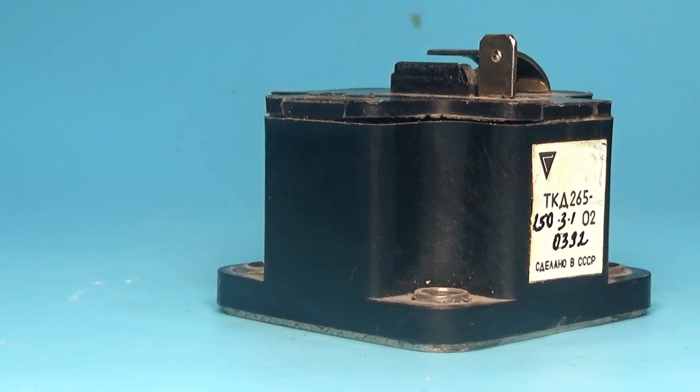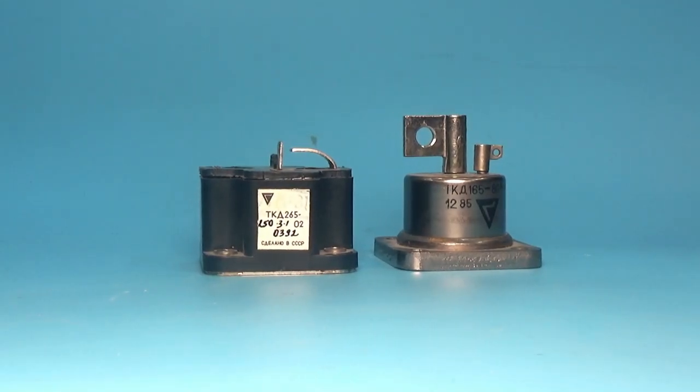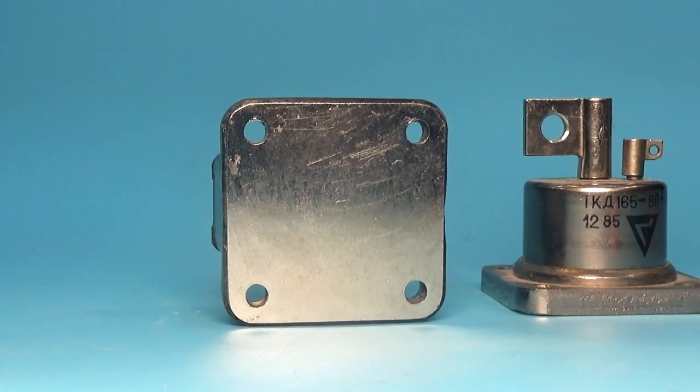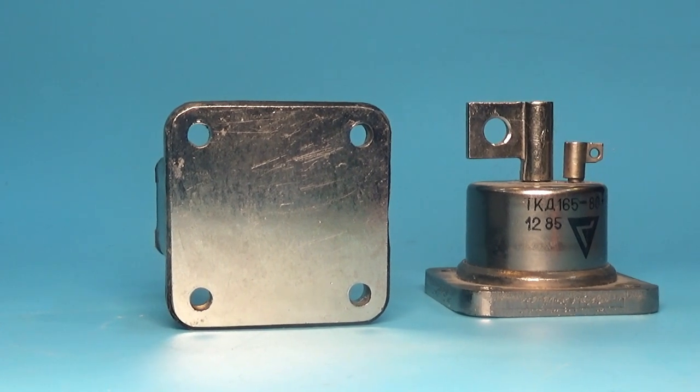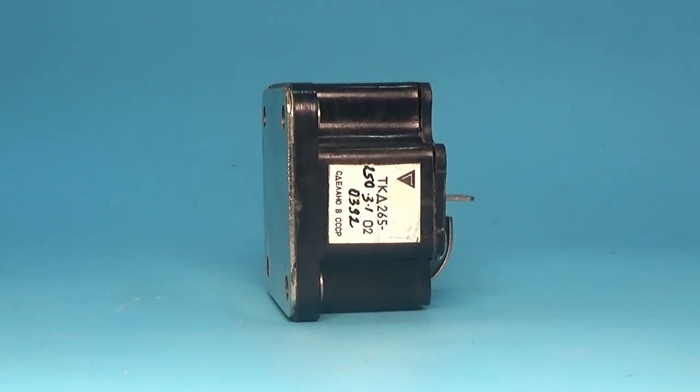The declared gain of this transistor is 100. In fact, it is less. But even with this in mind, in order to pass a current of 250A through it, 25A must be poured into the base. And in some places, this pair may not be enough.